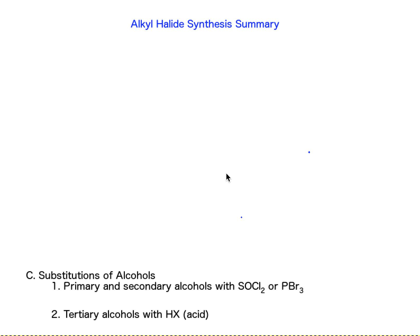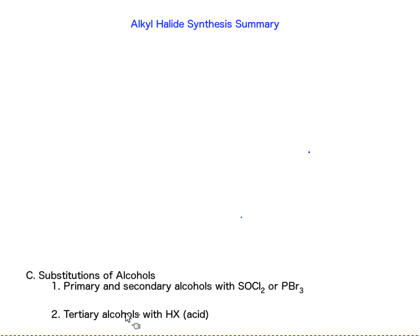The reaction we're going to discuss when talking about alkyl halide synthesis is the substitution reaction on tertiary alcohols. We mentioned how we needed to make the OH on primary and secondary alcohols a better leaving group through reaction with SOCl2 or PBr3, and those reactions don't really work very well with tertiary alcohols because of the steric hindrance on the alpha carbon.